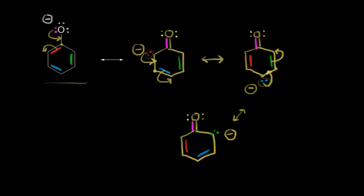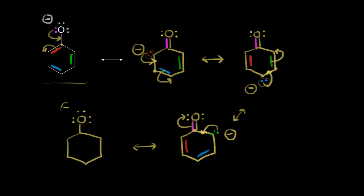We once again have a lone pair next to a pi bond — the electrons in green could move into here, and then we take the electrons in magenta and push them off onto the oxygen. In our last resonance structure, we have a single bond to the top oxygen with three lone pairs of electrons, giving that oxygen a negative one formal charge. Going around the ring: electrons in magenta are here, electrons in red, electrons in blue, and the electrons in green moved into here. So we have five total resonance structures for the phenoxide anion.